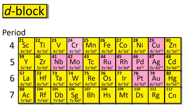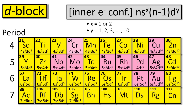In general, a d-block element's electron configuration will include its inner electron configuration, one or two electrons in the ns orbital, and some electrons in the n-1 d-orbitals.